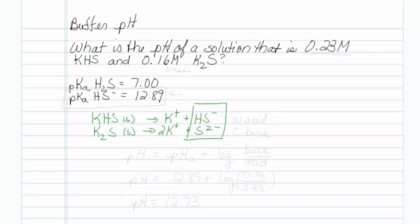So when we break out the Henderson-Hasselbalch, which is what you want to do when you have a weak acid and the conjugate base, we actually want to use the 12.89, because that is the pKa that's appropriate for HS- acting as an acid to give S2-.